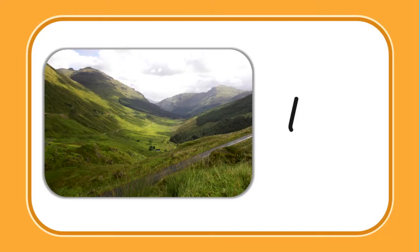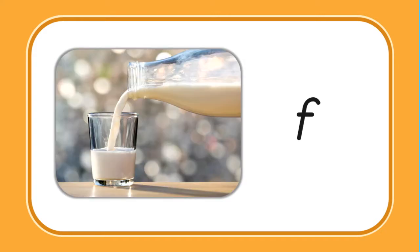Now let's try something just a little different. This time I'm going to give you the beginning letter or letters, and I want you to tell me the family name. I see a picture and I see the letter L — this is another word for ground. What word family do I need? What's another word for ground, Polly? Land! And I should add what family? The -and family. Very good — and there we have it, land. Try this one: if I pour milk into a glass up to the top? Fill! And there we need the -ill family.